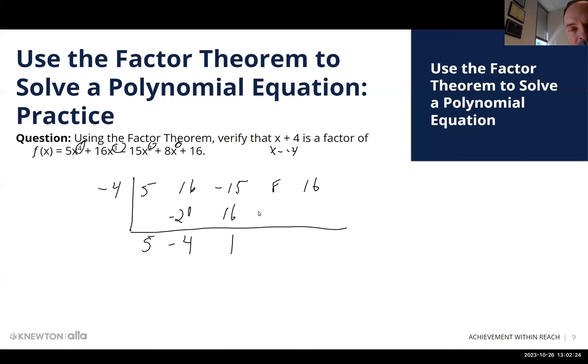Negative 4 times 1 is a negative 4. 8 minus 4 is 4. And negative 4 times 4 is minus 16, a remainder of 0. That means that x plus 4 is indeed a factor.